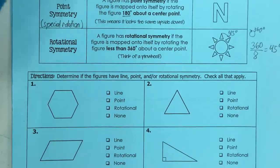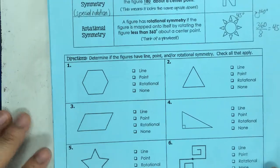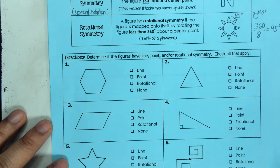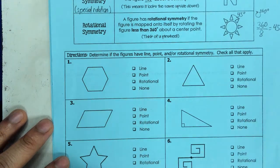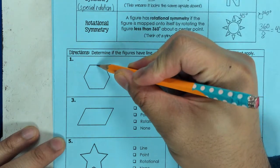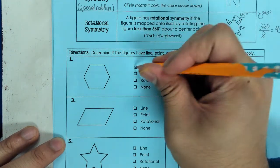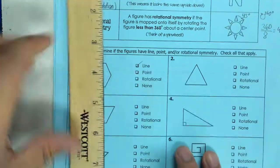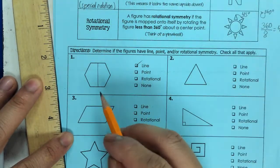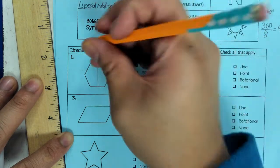Alright, so let me cover a few examples of symmetries here. Number one we have a hexagon and we are to figure out what kind of symmetries it has. First line symmetry: we can cut this down the middle this way. Also for line symmetry, let me cut this down the middle. This is called vertical line symmetry.